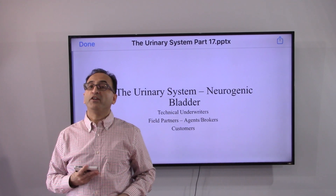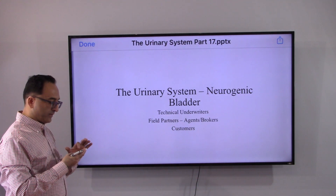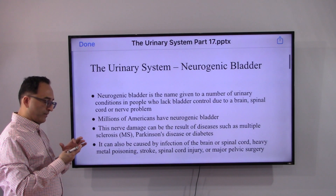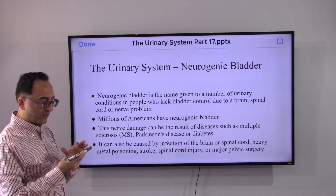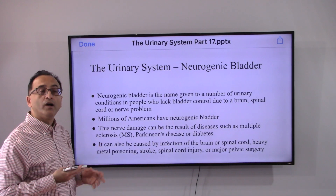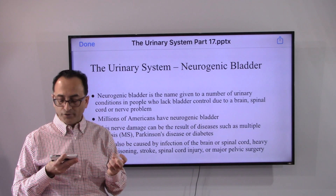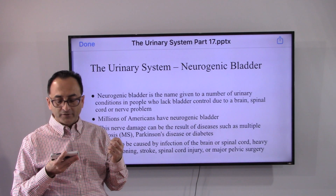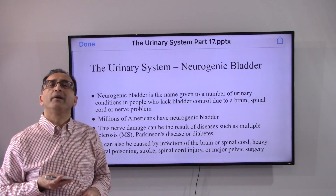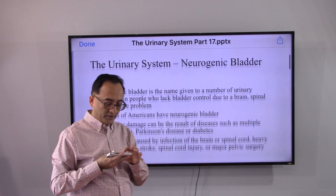Let's continue with the urinary system. In this video we will be looking at the neurogenic bladder. Neurogenic bladder is the name given to a number of urinary conditions in people who lack bladder control due to a brain, spinal cord, or nerve problem. Millions of Americans have neurogenic bladder.